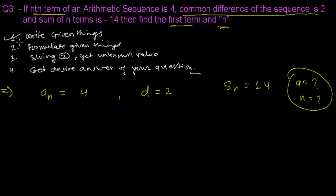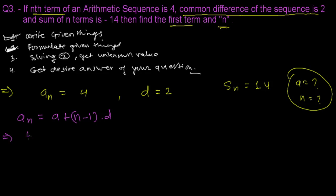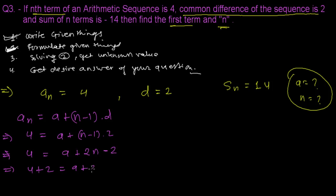Now step two: formulate the given things. We'll use the nth term formula: aₙ = a + (n-1)d. Substituting aₙ = 4 and d = 2: 4 = a + (n-1)×2, which gives 4 = a + 2n - 2, so a = 6 - 2n.